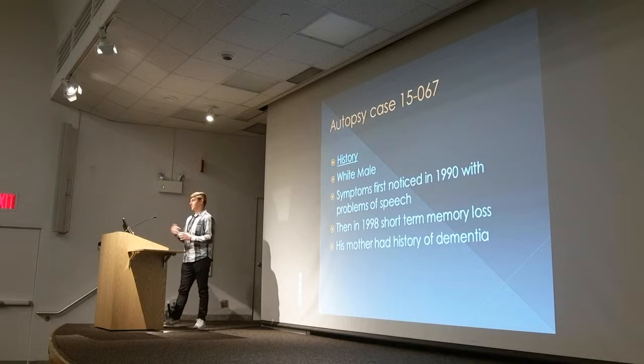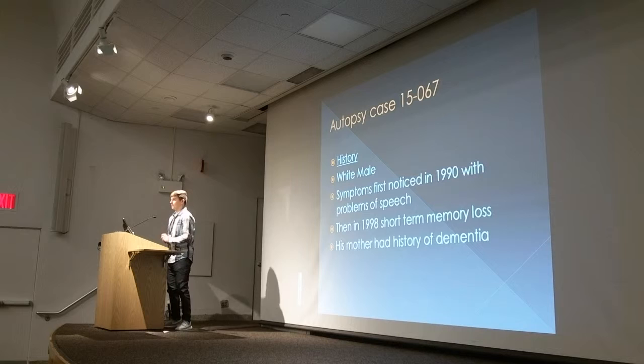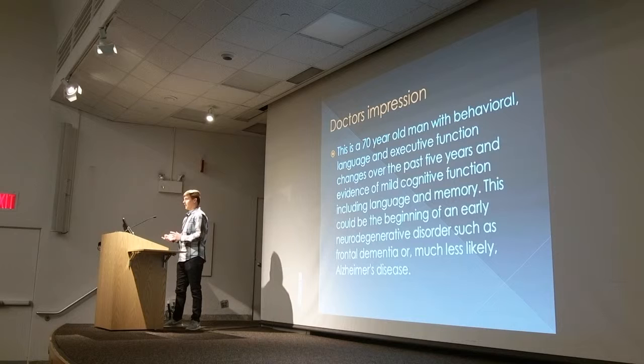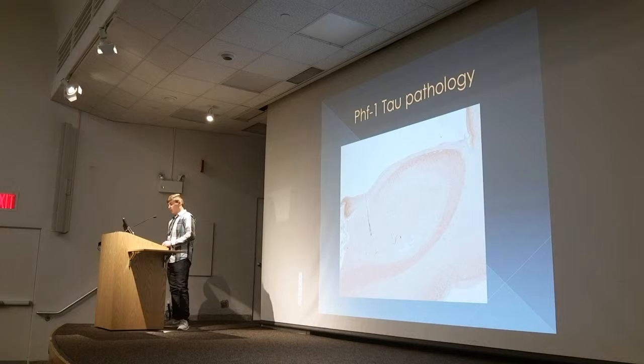The previous case that I worked on was a white male. He had first symptoms noticed in the 1990s with speech problems, and he was around 60 at that age. In 1998 he had short-term memory loss, and there was no family history of dementia. The clinical question was that the span of behavioral, language, and executive function had changed over the past five years, with evidence of mild cognitive impairment including language and memory. This could stem from neurodegenerative disorders such as frontotemporal dementia, or much less likely Alzheimer's disease.